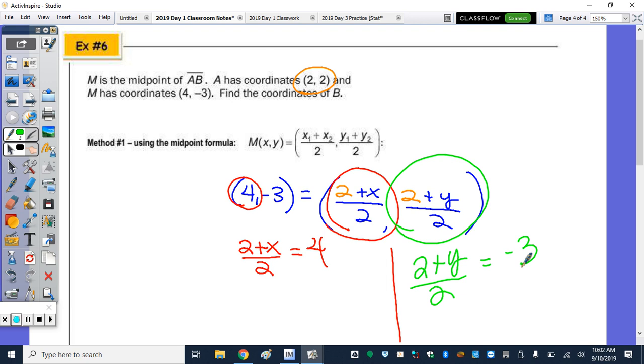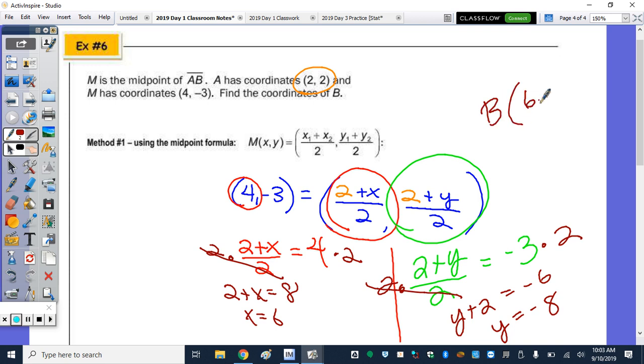So if we multiply both sides by 2, to cancel out the 2's, we have 2 plus x equals 8. Do the opposite of adding 2 or subtract 2, we get that x is 6. Is that what we got down below? Yeah. And then over here, multiply or solve this equation by 2. We end up with y plus 2 equals negative 6. Subtract the 2 and we get y equals negative 8. So for B, we just found the x coordinate of 6, y coordinate of negative 8.